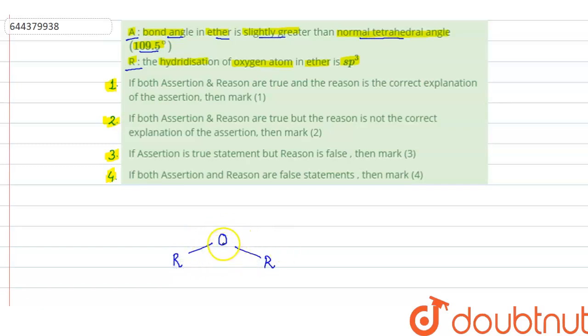And on this oxygen there are two lone pairs. So you can show the lone pairs like this. If we talk about the geometry of this ether, for finding out the geometry we have to find out the hybridization of oxygen.